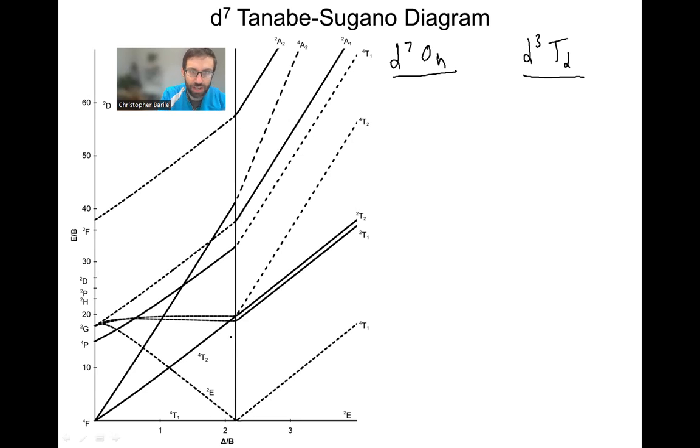This is a generic diagram that can be used for octahedral or tetrahedral complexes, right? D7 octahedral or D3 tetrahedral. When we're at zero on the x-axis, that means we have no ligands. And so we're in spherical symmetry. This is like a transition metal cation just by itself with no ligands. And so you can see we have these letters like the ground state is a quartet F. There's an excited state quartet P. We call those the free ion terms.